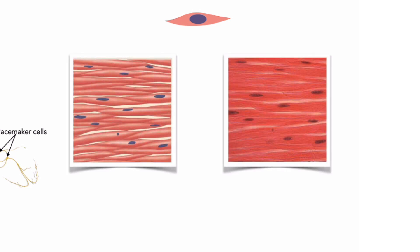Therefore, no distinct banding or striation pattern is observed. Smooth muscle cells can divide, so smooth muscle tissue can regenerate after injury.